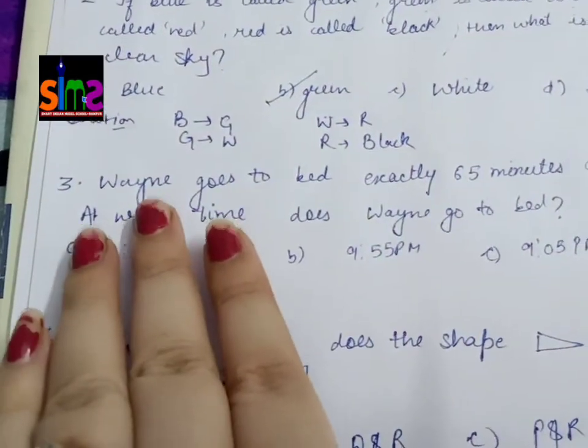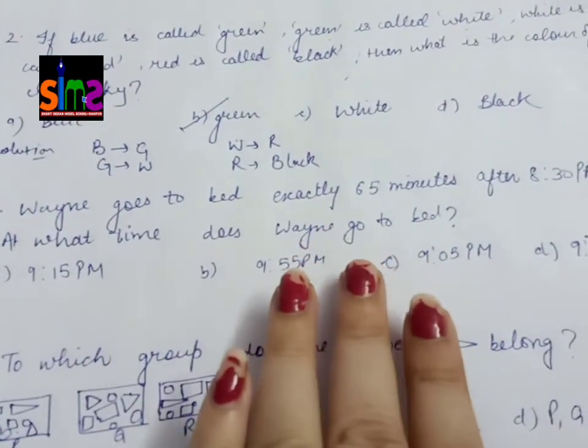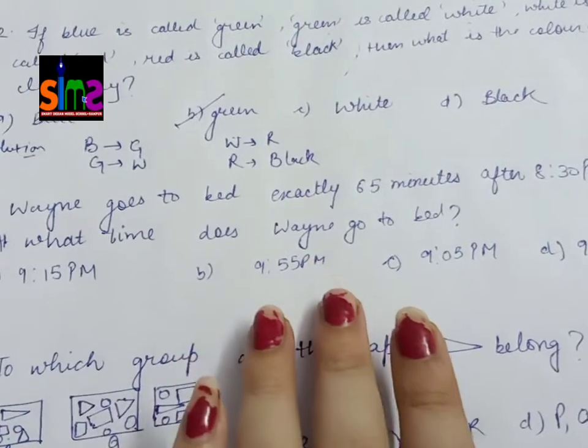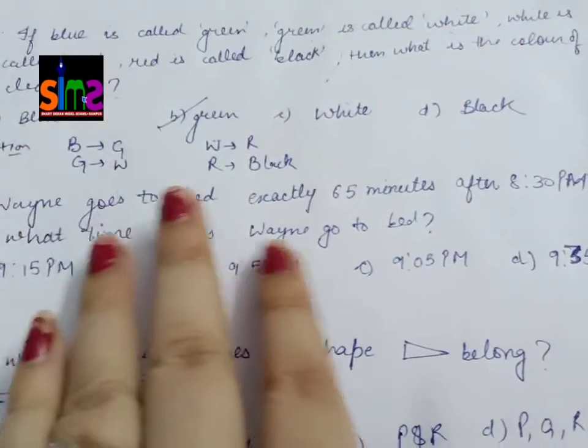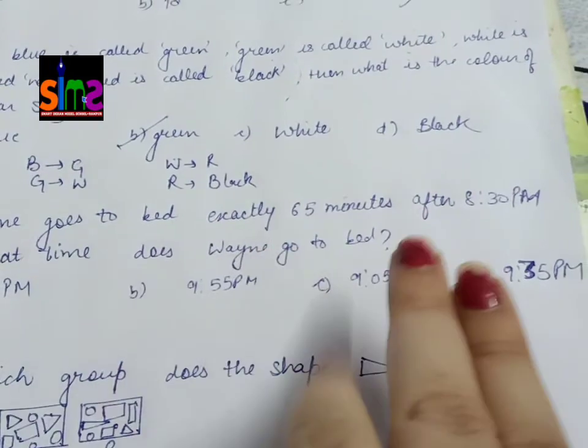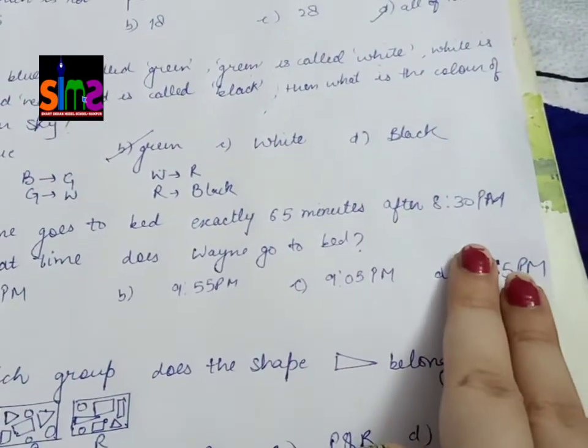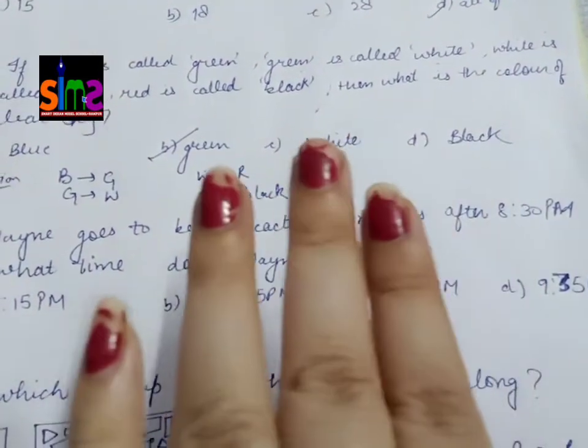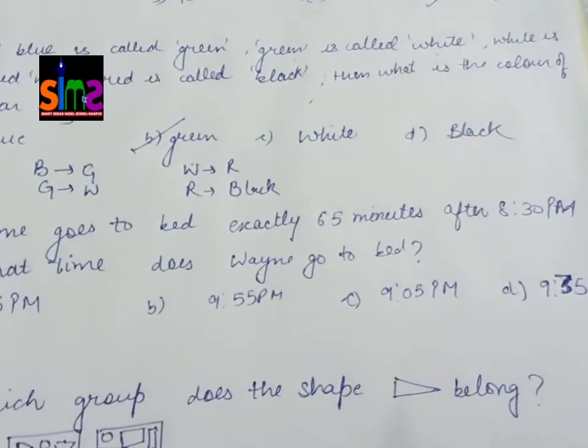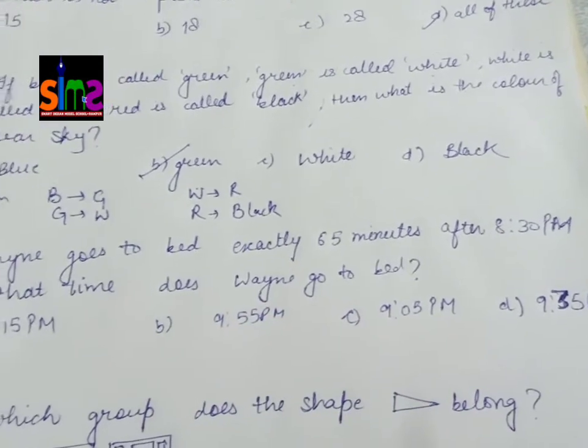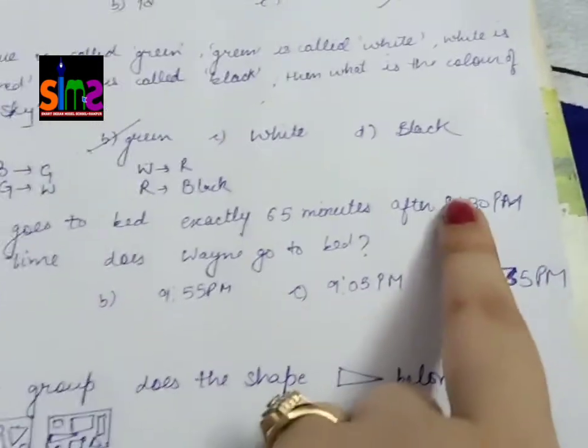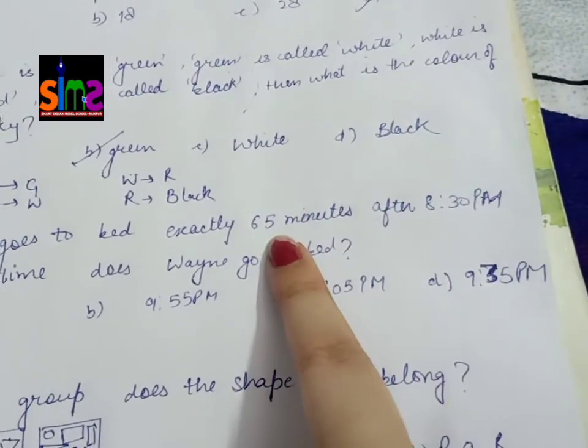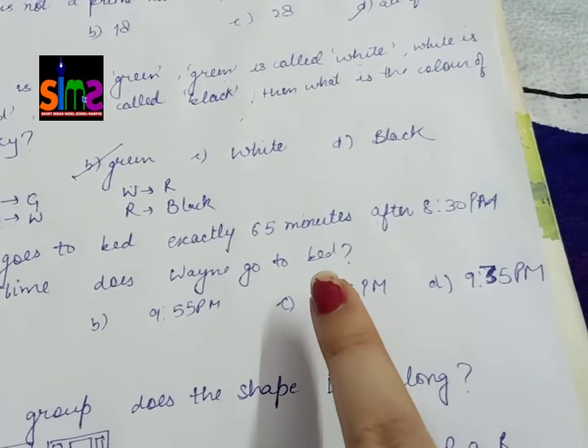Next question: Wayne goes to bed exactly 65 minutes after 8:30 PM. At what time does Wayne go to bed? The child says he will sleep 65 minutes after 8:30 PM. So you have to calculate what time he sleeps. 1 hour is equal to 60 minutes.